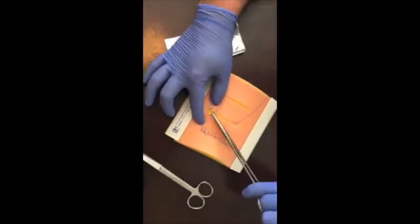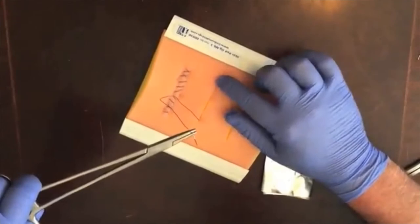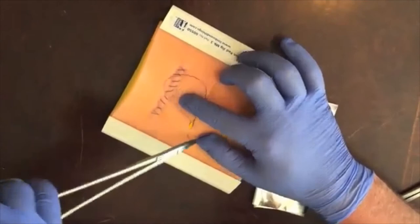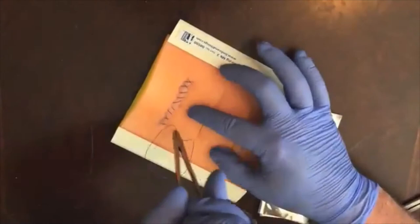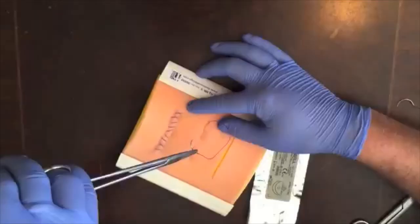Now that we've completed our deep tissue closure, we'll close the sub-Q layer or intradermal pass. This is done as you would any other intradermal pass, by running down the suture line in a horizontal fashion. Remember, quill never comes above the skin.